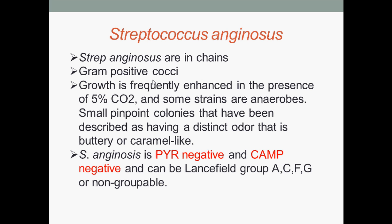The next bacterium is Streptococcus anginosus. They are gram-positive cocci in chains. Growth is frequently enhanced in the presence of 5% carbon dioxide, and some strains are anaerobes. They form small pinpoint colonies and are described as having a distinct odor that is buttery or caramel-like. Streptococcus anginosus is PYR negative and CAMP negative, and can be Lancefield-grouped A, C, F, G, or non-groupable.